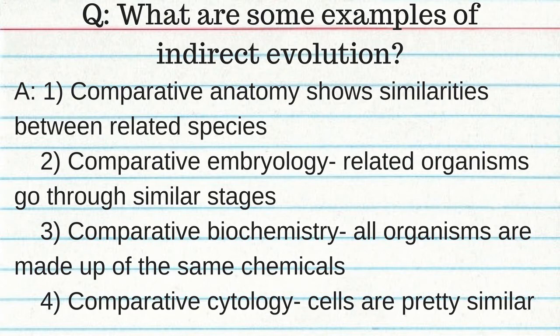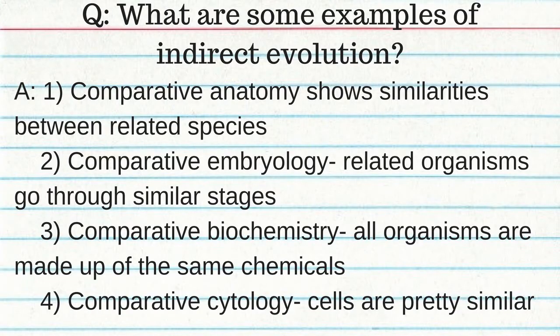Indirect evidence of evolution: comparative anatomy shows similarities within related species, implying a common ancestor; comparative embryology shows related organisms go through similar developmental stages; comparative biochemistry shows all organisms are made up of the same chemicals; comparative cytology shows cells are similar across organisms, even plant and animal cells.